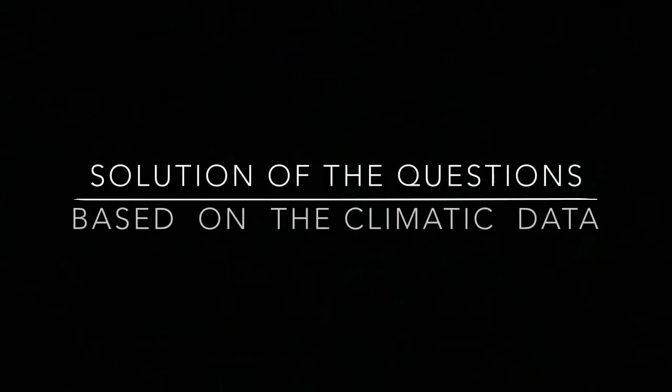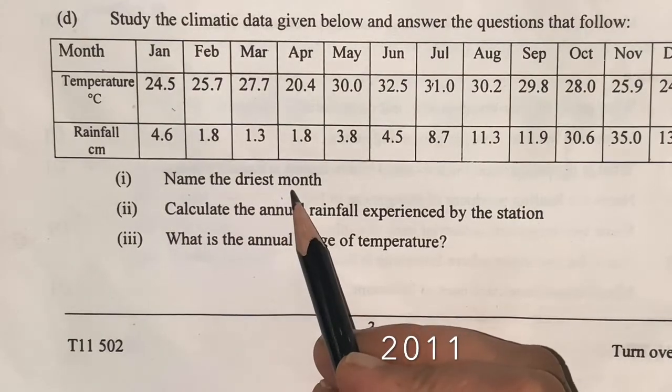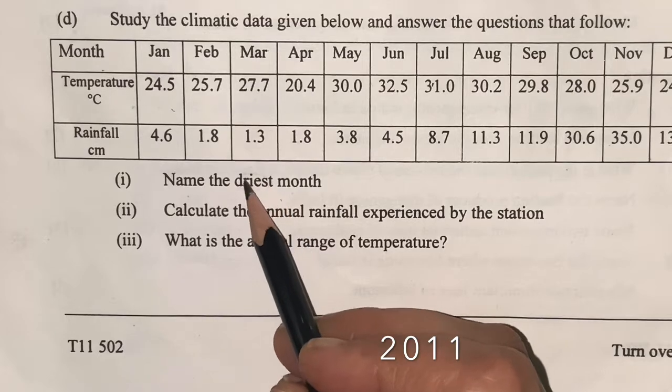Hello friends, let's see the solution of the questions based on the climatic data. We will start with the year 2011. Question number one is: name the driest month. The word driest means the month which is having the least rainfall.